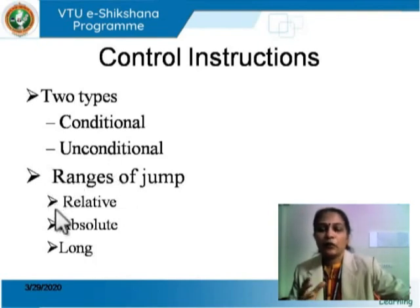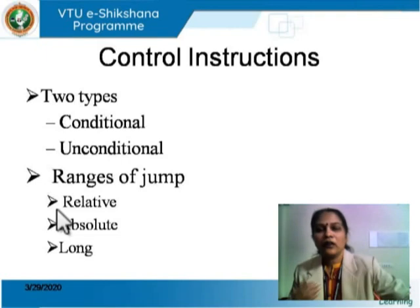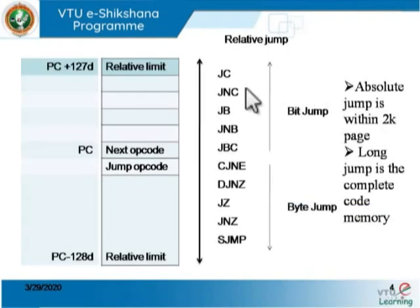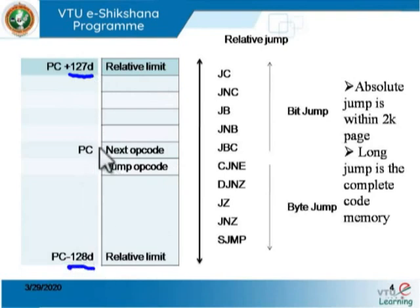Why do we say 'range of jump'? When a jump instruction is executed, control is transferred to the specified label, and from there execution of the new instruction begins. It is not necessary that control returns to where the jump took place. The relative type considers a transfer of control within the range of plus 128 to minus 128, with respect to the program counter value.